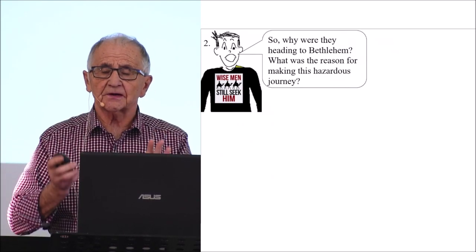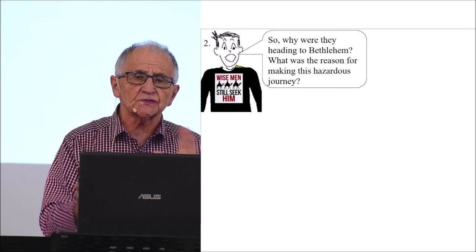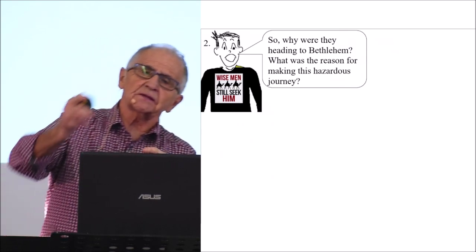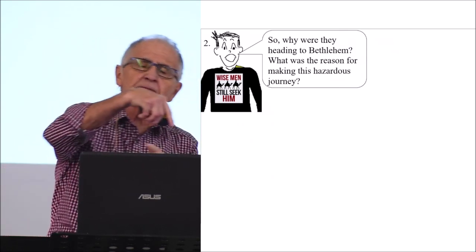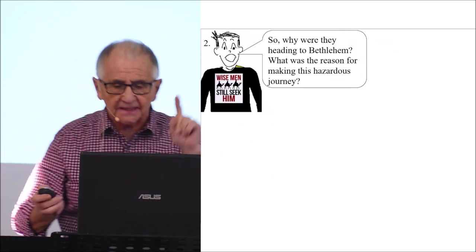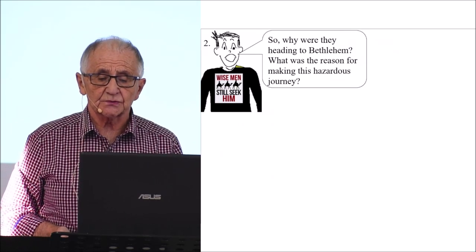And what you see here is God controlling circumstances to make the preordained plan happen as he intended. Proverbs 21, verse 1 says,